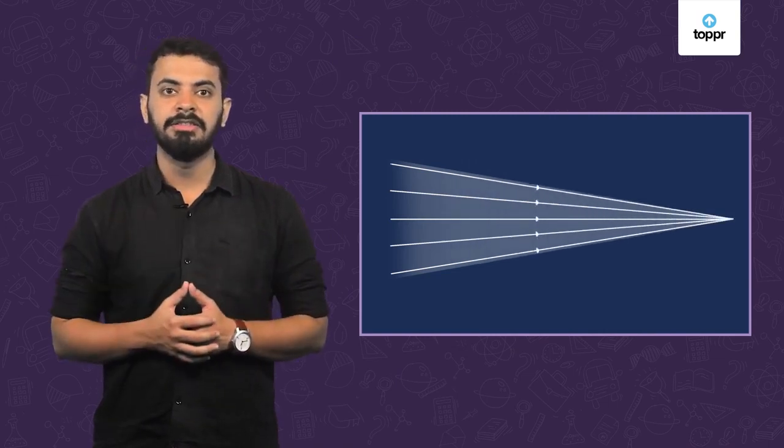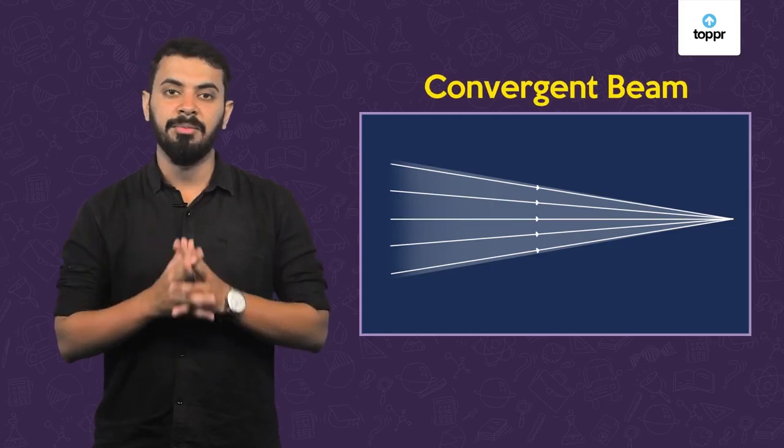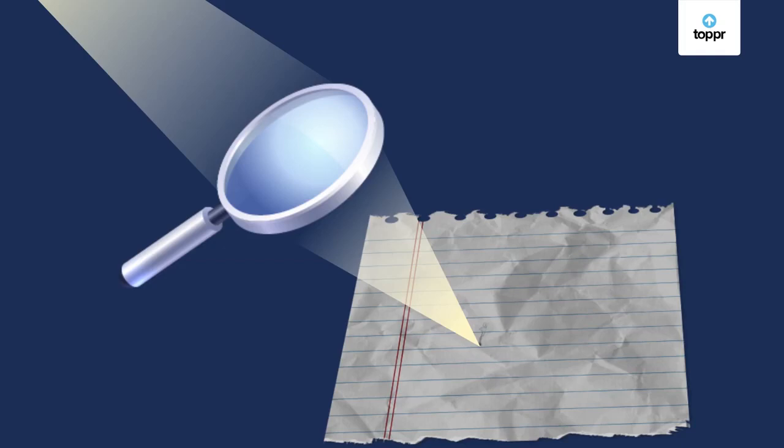Now what about the opposite? That is a beam that becomes narrower as it travels. Well, such a beam is called a convergent beam. An example is the sunlight focused by a magnifying glass.